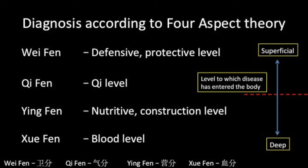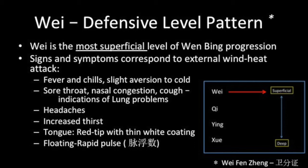According to this theory, Wenbing pathogens first attack the defensive or Wei level and then potentially progress to further levels. The signs and symptoms of Wei level disease correspond to an external wind heat attack. They include fever and chills with a slight aversion to cold, nasal congestion with a cough accompanied by a sore throat, headaches, and increased thirst. The tongue will often have a red tip with a thin coating and the pulse will be floating and rapid.